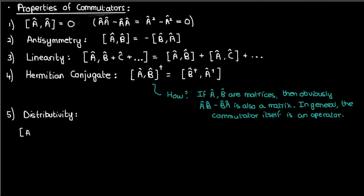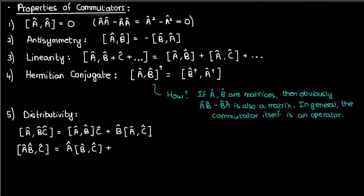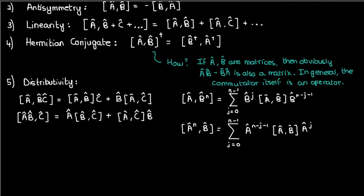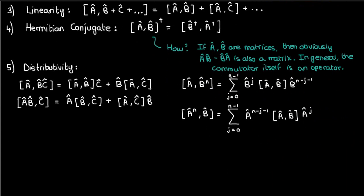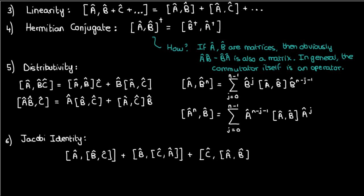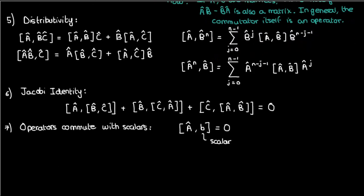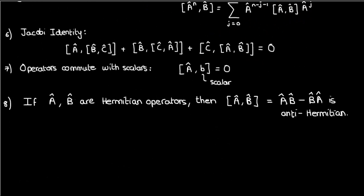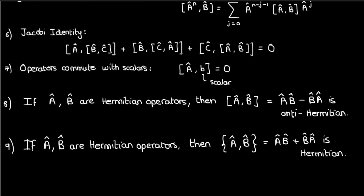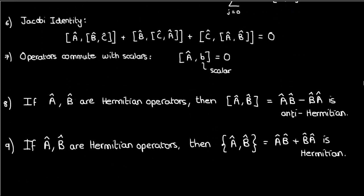The fifth property states that the commutator is distributive, and we can extend this to large numbers of operators as well. Property six is called the Jacobi identity — it states that the sum of these commutators, each involving nested commutators inside them, is zero. The seventh property states that the commutator of an operator with a scalar is just zero; in other words, operators and scalars commute. The eighth property is that the commutator of two Hermitian operators is anti-Hermitian, and property nine is that the anti-commutator of two Hermitian operators is Hermitian.